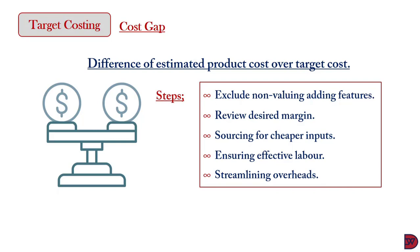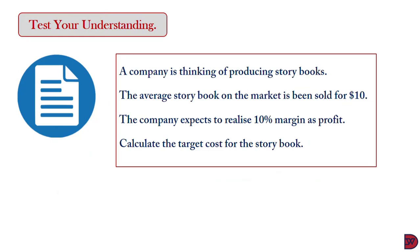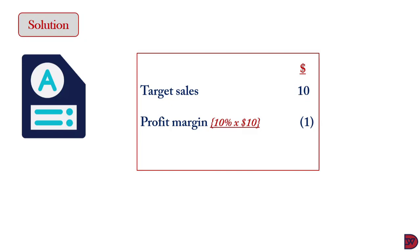Lastly, utilities can be managed to see a reduction — for instance, lights must be turned off when not in use, or a relatively cheaper warehouse rented. For the example: a company is thinking of producing storybooks. The average storybook on the market is sold for $10, and the company expects a 10% margin. Target sales: $10. Profit margin: 10% of $10 = $1. Therefore, the target cost is $9 — the maximum cost of production.